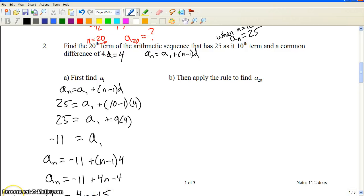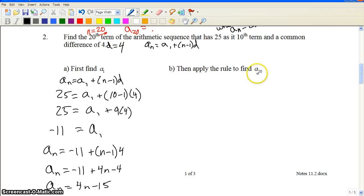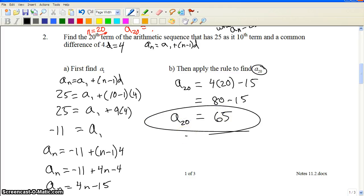After we get the closed form of the arithmetic sequence, we're going to turn around and we want to know what a sub 20 is. We want to know what the 20th term is. That was the goal of the problem. So we're going to put 20 for n into our formula that we set up. And we're going to do 4 times 20, which is 80 minus 15, which is going to be 65. And that is going to be our answer to the whole problem.